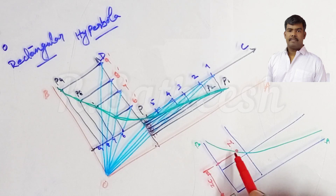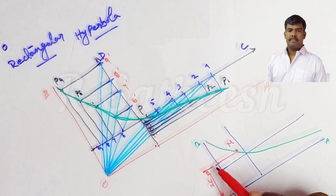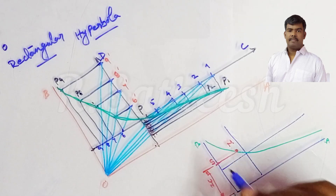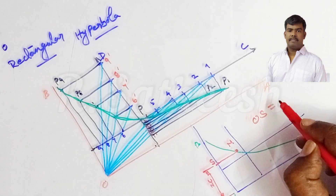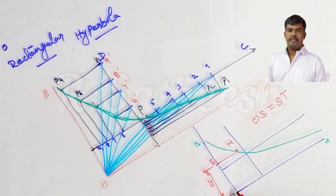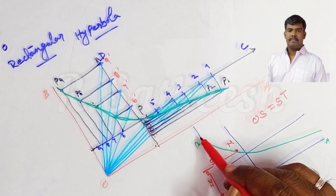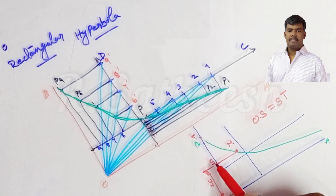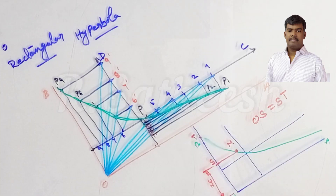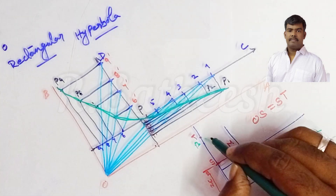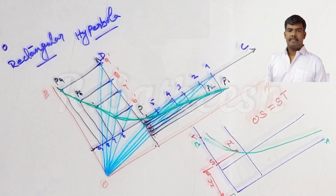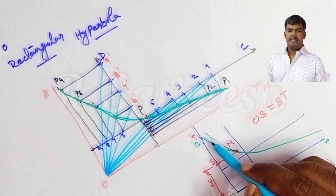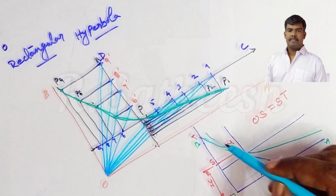We want to draw a tangent passing through point M. The distance from O to S along the asymptote equals the distance from the asymptote to M, which is 20 mm. So OS = 20 mm. Then mark ST such that OS = ST — so here to here is 20 mm, and here to here is another 20 mm. Let us call this point T. Now join T and M, and extend the line.